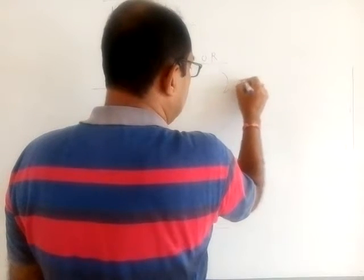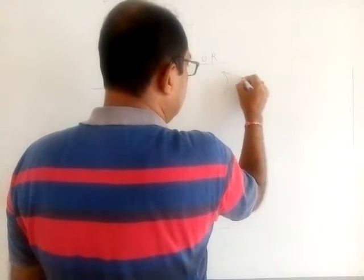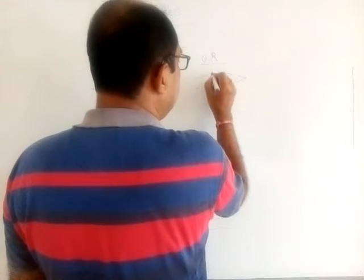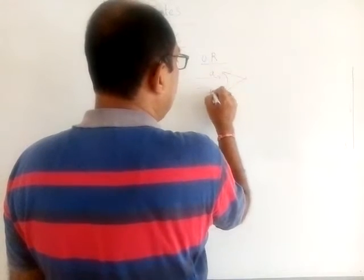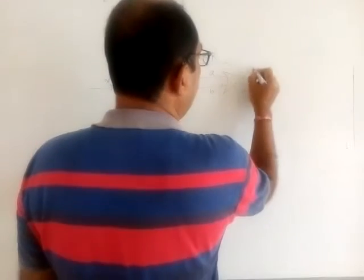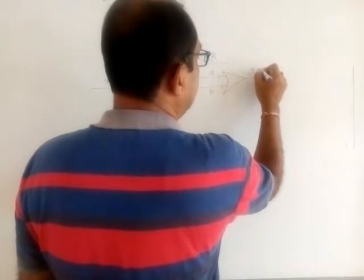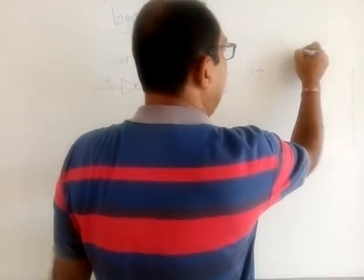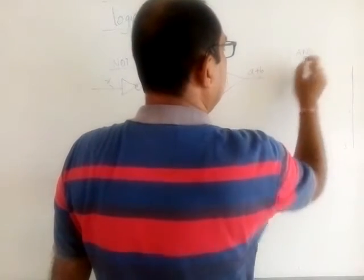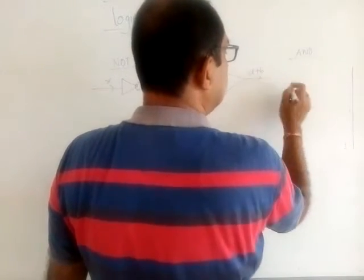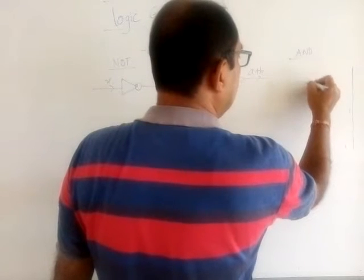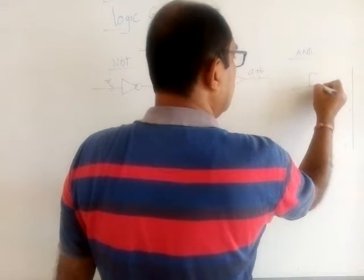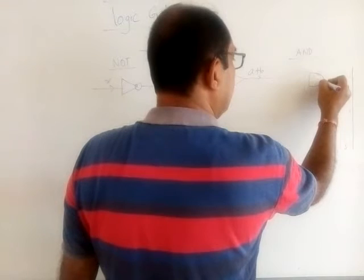We also studied the OR gate — if we pass two currents A and B, we get the output A plus B. And we studied another gate called the AND gate. The AND gate looks like a broken capsule shape, and if we pass A and B, we get the output A dot B.